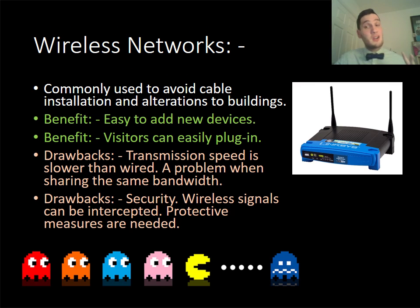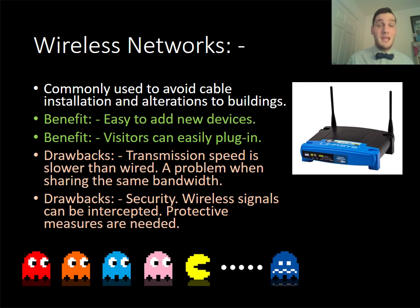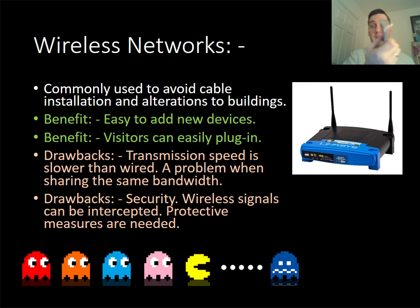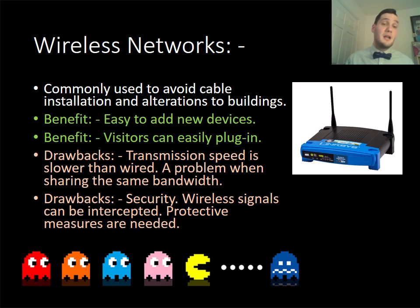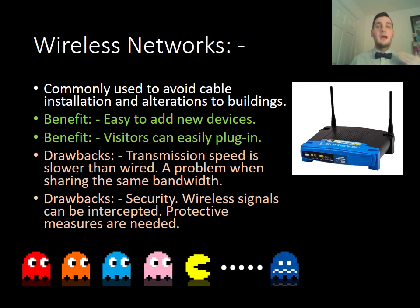Wireless networks are common these days because companies want to avoid putting cable installations all around their building. The benefit is that it's easy to just get the Wi-Fi code and connect to a network, so visitors can tap into the network easily. The problem with wireless networks is that they can be a lot slower because you're sharing the same bandwidth — if your wireless device only accepts 50 megabytes and you've got lots of devices on it, your internet access speed will drop.